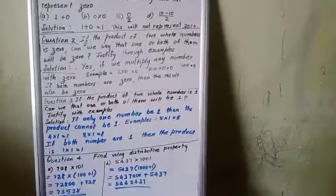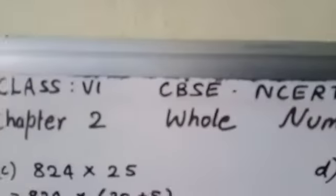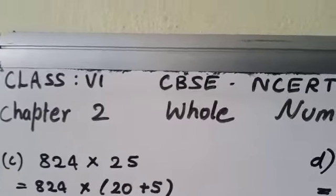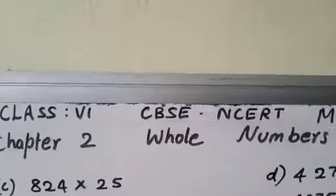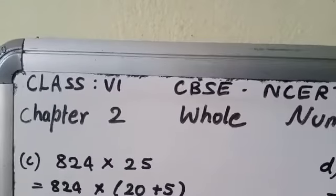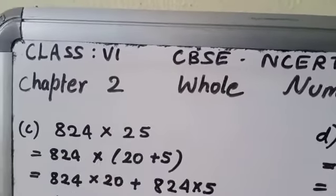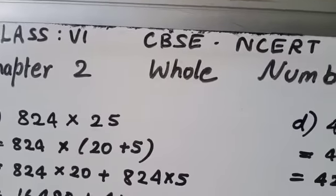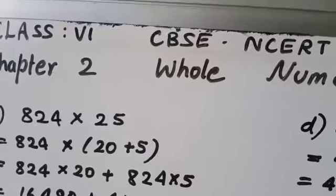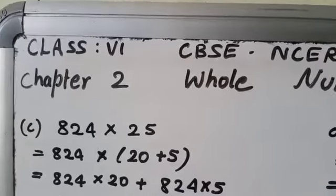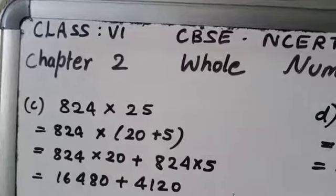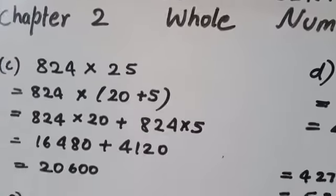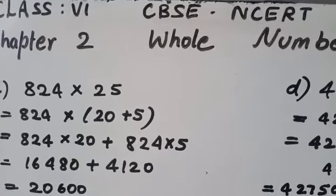See 824×25. We can split the number, then only we can use the distributive property. 20+5, not only for that purpose, then it becomes easy for us to do the multiplication. 824×20+824×5. When we multiply, just double of that, then one 0. 824 if we double is 1648, means 16,480, plus 4,120. Easily we will be getting the answer 20,600.